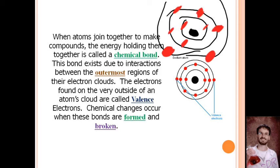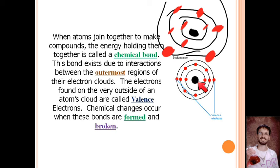When two atoms come together to make a compound, the nuclei are really far apart from each other — they stay really far apart. The parts of the two atoms that actually interact are the outermost electrons; even the inner electrons won't ever come in contact. It's almost like two nearby cities that grow up and start sprawling — it's going to be the outer suburbs that bump up against each other. The inner parts of the city are never going to come in contact.